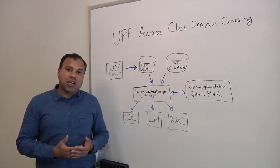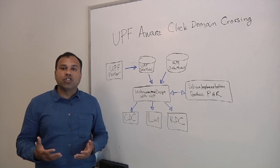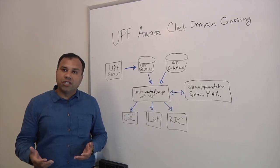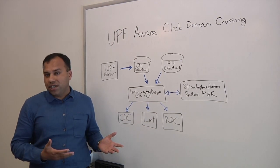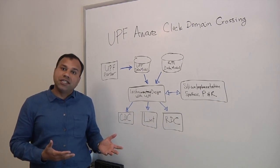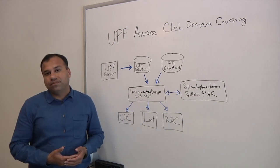What does that buy you? So that basically uncovers the bugs which can be caused because of insertion of low-power devices like isolation, retention, level shifter in silicon and netlist, which were not presented at RTL, where you are doing the traditional CDC verification. You catch those bugs which are escaping.